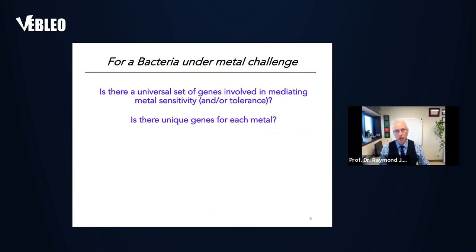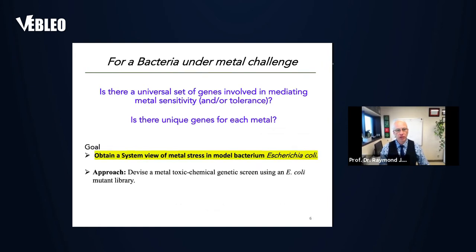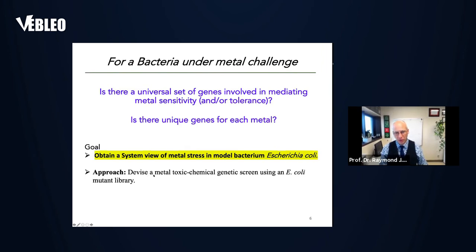These were not known at all. Our idea was that if we could obtain a system view — a physiological system view of metal stress — we would use E. coli as our model because a lot is known about this bacterium, which has been studied genetically and physiologically since the 1960s. This was a good model system to start with, and a mutant library was available so we could devise a metal toxic chemical genetic screen using this mutant library.